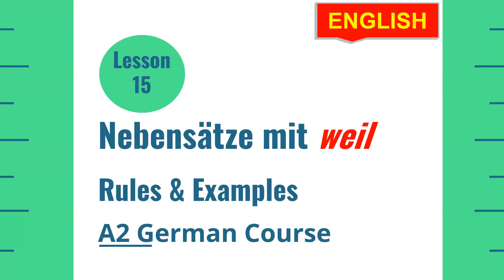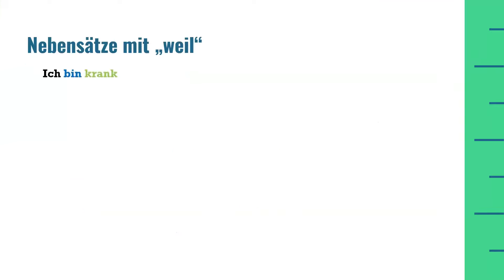Hi everyone and welcome to Germany for Student channel. Today is lesson number 15 of A2 level of the German language course and the topic we are going to cover today is Nebensätze mit 'weil'. This is the continuity of lesson number 14, where we covered one possible scenario of using Nebensätze mit 'weil'. In today's lesson we will cover the second option. So let's start the lesson.